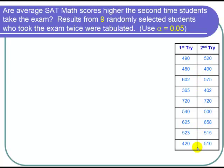For example, this student went from 602 to 575. We want to find out whether we have statistically significant evidence to show improvement.